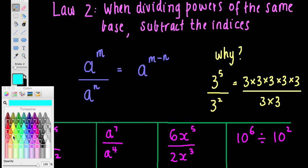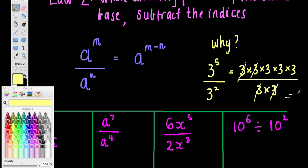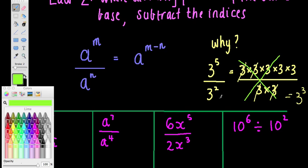Why does it work? Take 3 to the power of 5 divided by 3 squared. Writing it out, 3 to the power of 5 over 3 squared — because it's a fraction I can cancel out common factors. Cancelling pairs of threes from top and bottom, I'm left with three extra threes on top, giving 3 to the power of 3. Using the law: 3 to the power of 5 minus 2, and 5 minus 2 is 3 — so this is a really handy shortcut. These laws are lovely shortcuts — we can do this in one step.